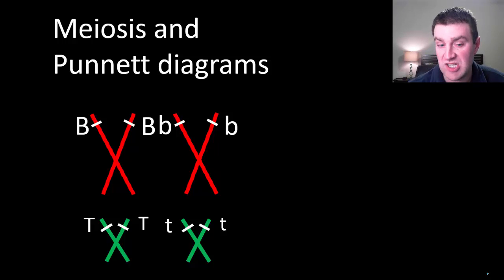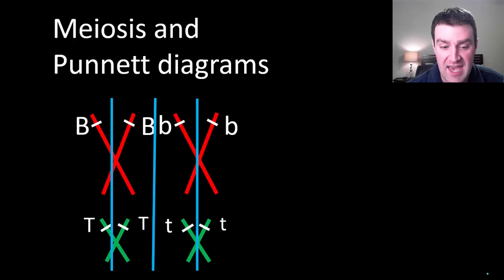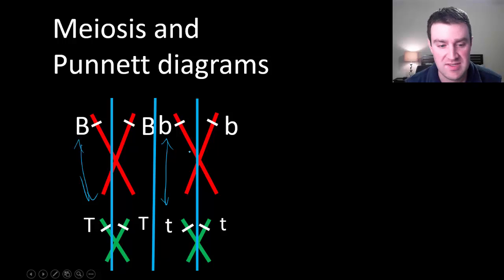Maybe one such lineup would result in them lining up like this. If we split apart the pairs in the first division and then split apart the X copies in the second division, we notice that we might pass on the dominant alleles together in some of our gametes and the recessive alleles together in some of our gametes.